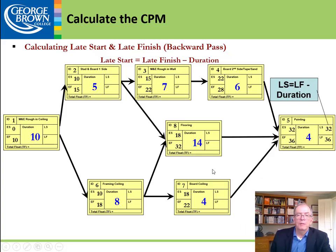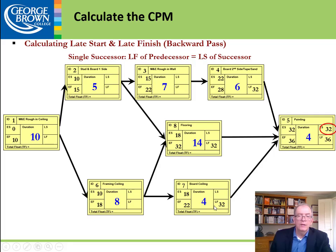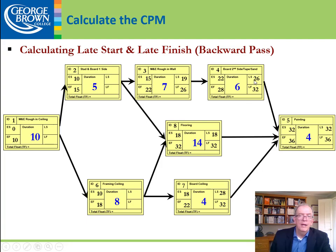Where activities diverge going backwards, that late start of 32 gets populated into the late finish of the diverging activities — the 32 goes into the middle activity and the bottom activity. We continue subtracting: 32 minus 6 gives 26, 32 minus 14 gives 18, and 32 minus 4 gives 28. Those numbers populate in.